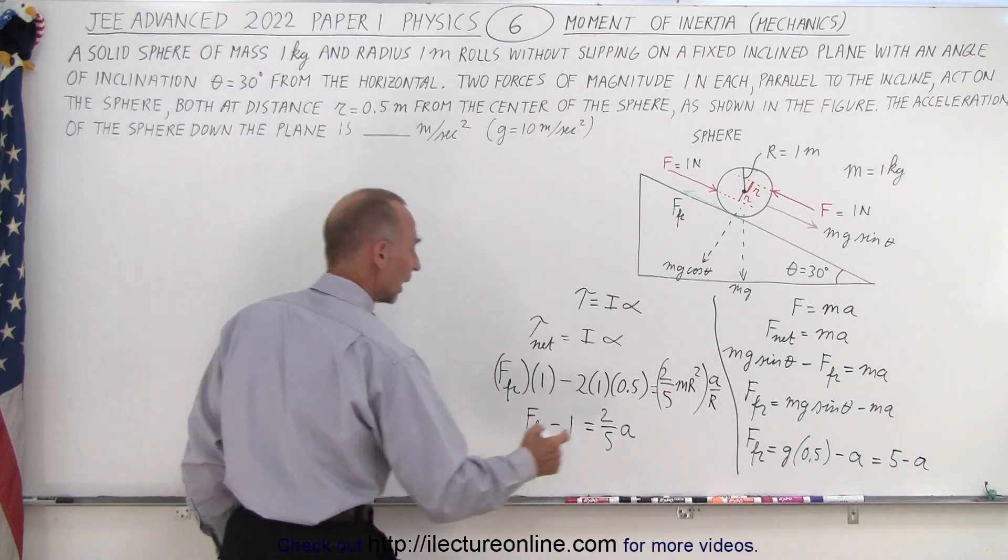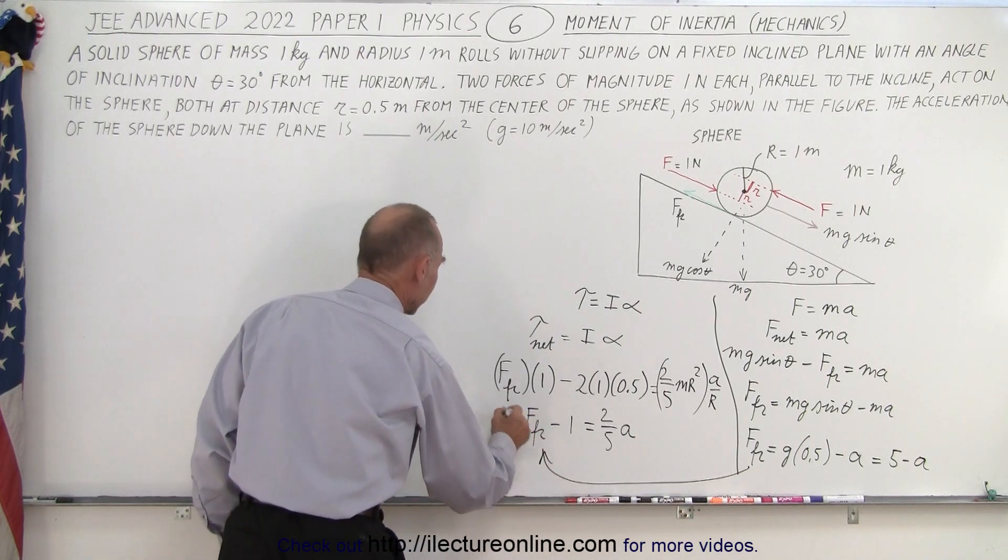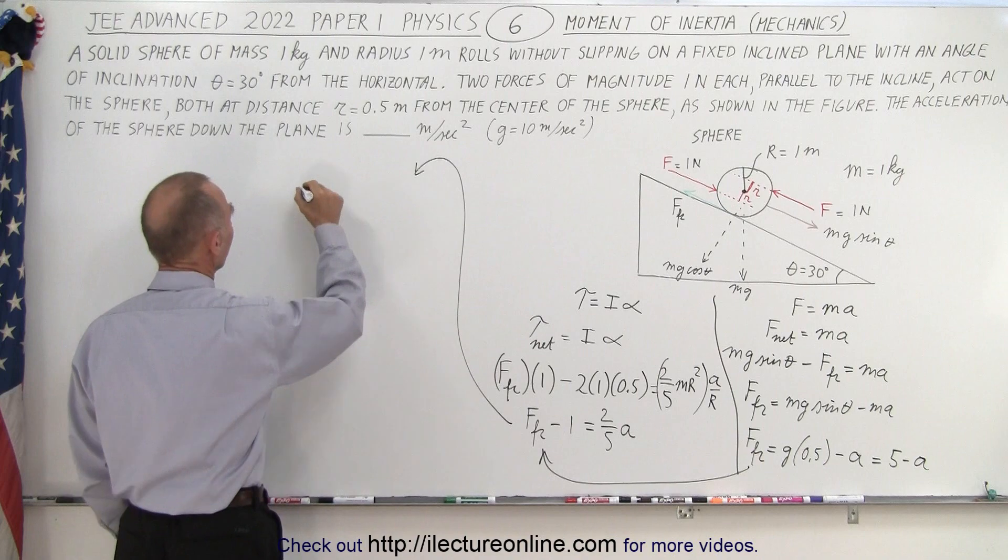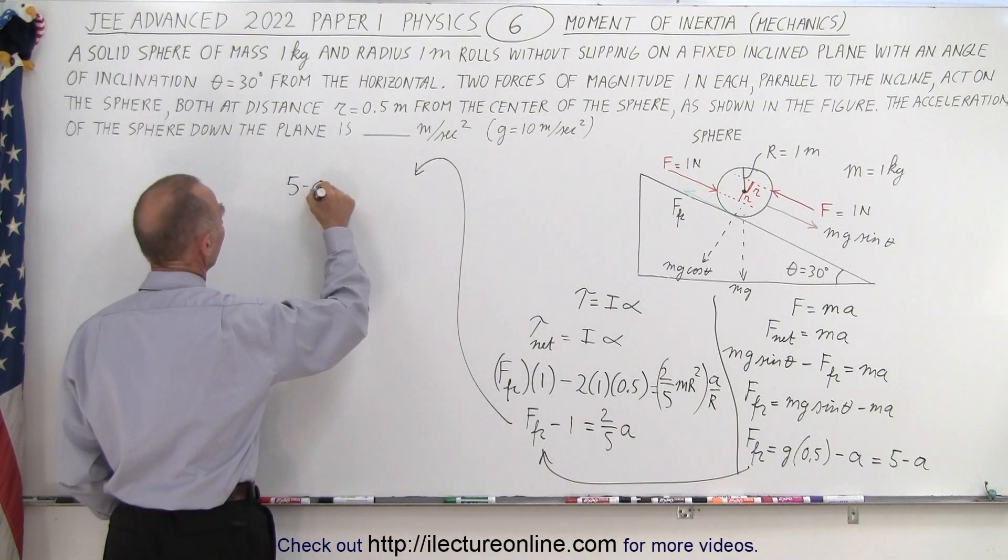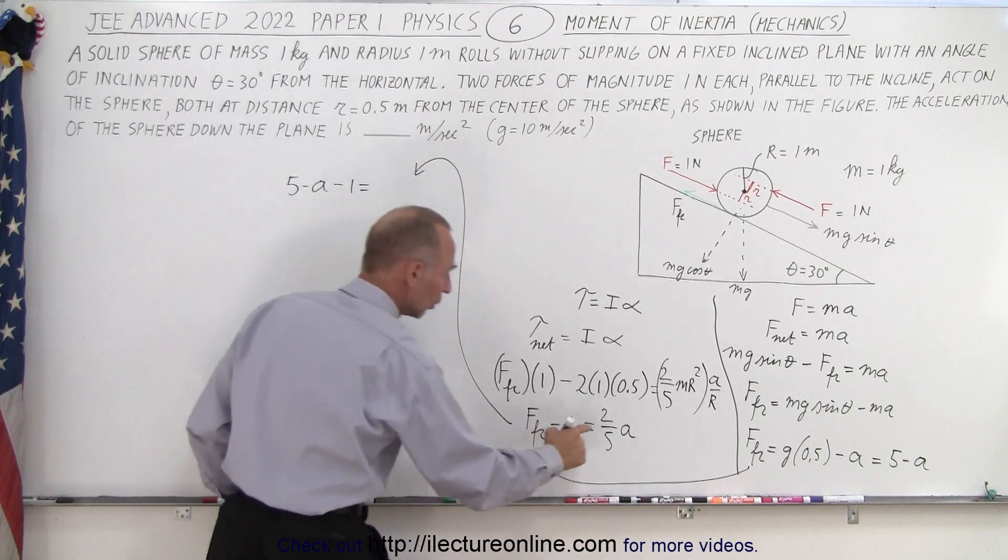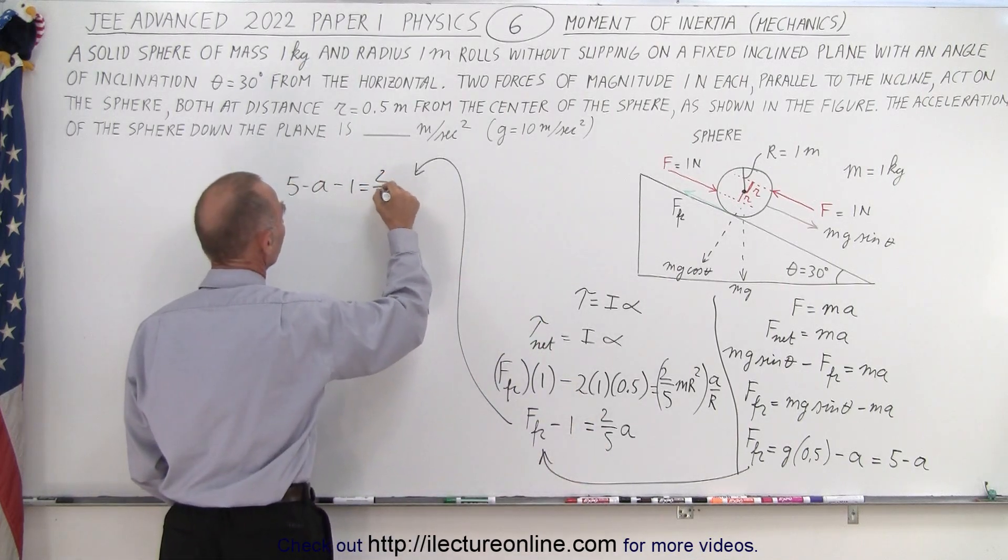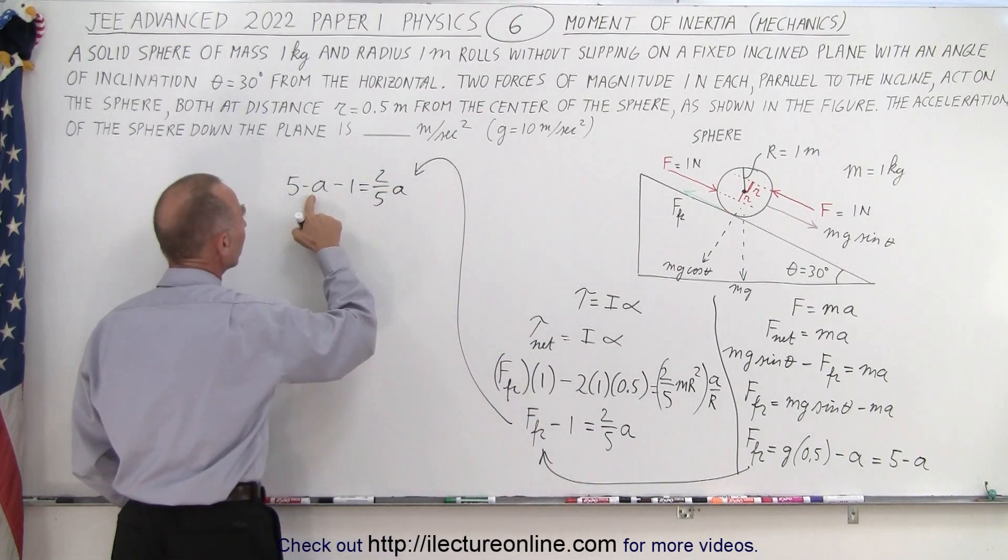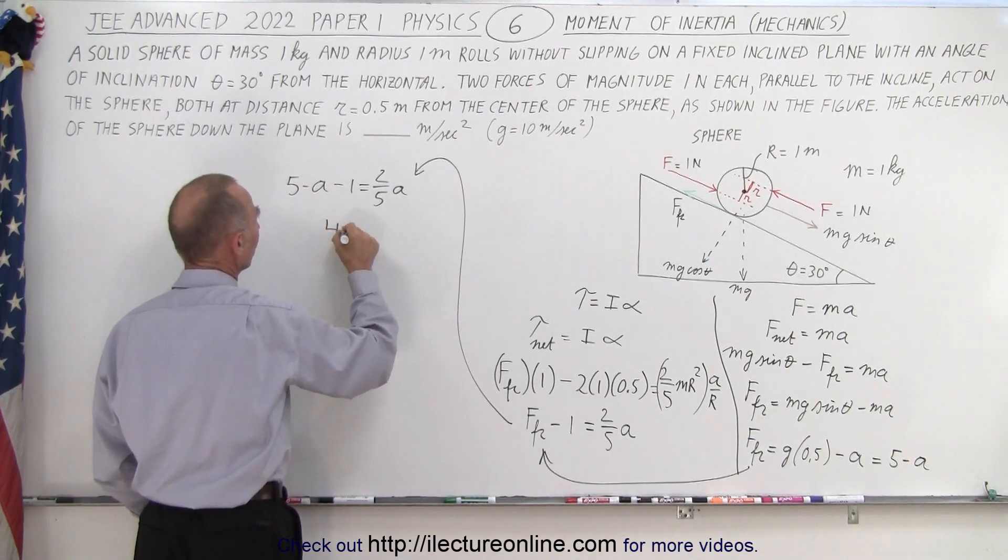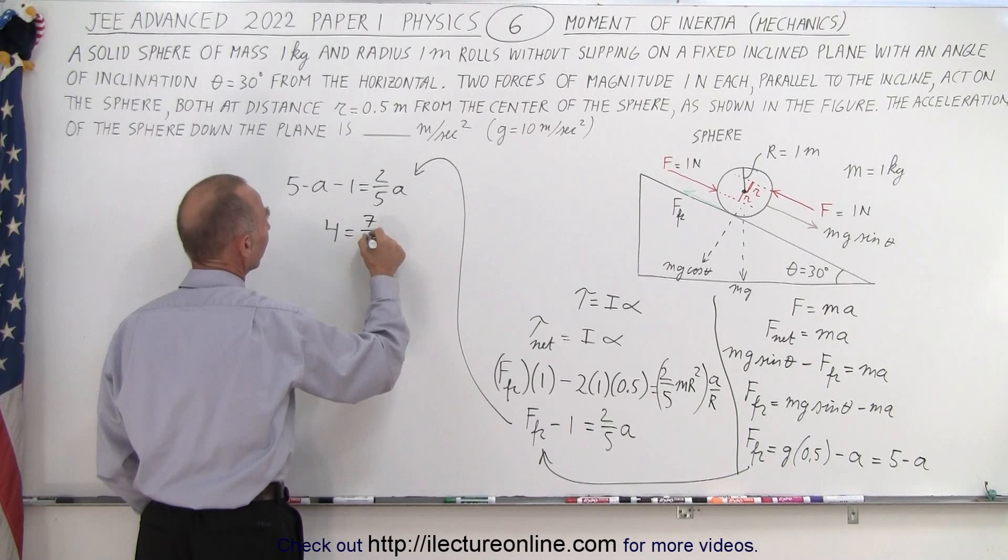So, finally, I can then plug that into this equation right here, and this equation then becomes the following. So, force friction now becomes 5 minus A. We have minus one. Minus one equals two fifths A. Two over five A. Moving this A across, that becomes seven fifths A. Five minus one is four, so four equals seven over five A.